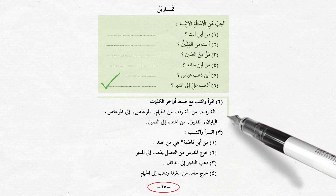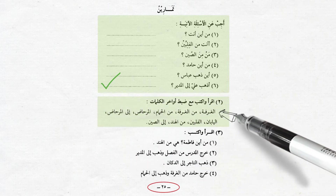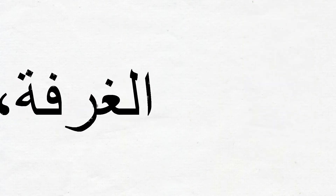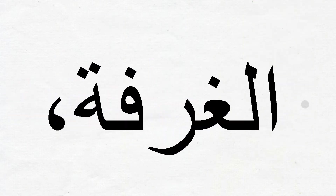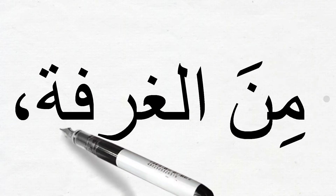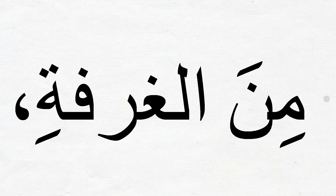We are in exercise 2 now. All we have to do here is to read and write the words with proper vowels at the end. The first word is Al-Ghurfatu — 'the room.' We end with dommah because the word is sitting by itself, so it is marfu' in its normal or neutral state. Next: Min al-Ghurfati — 'from the room.' Al-Ghurfati ends with kasrah because it is majroor, coming after harf jar min.